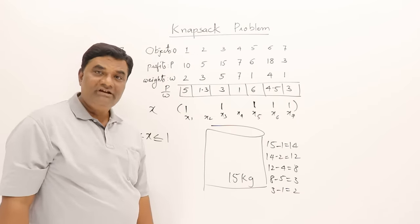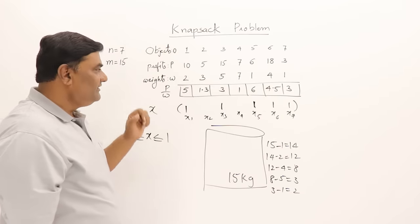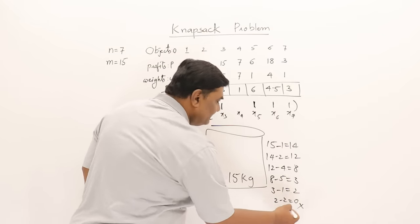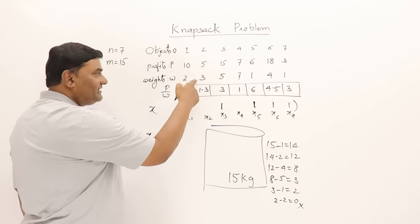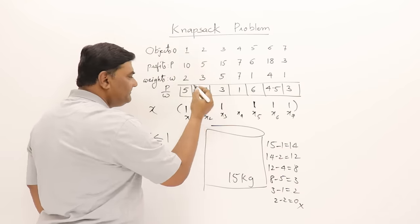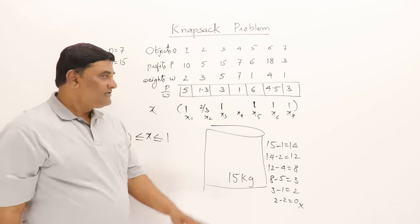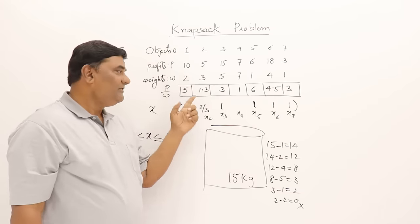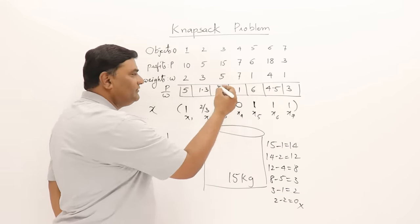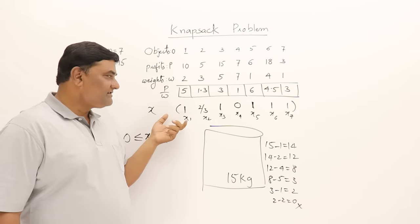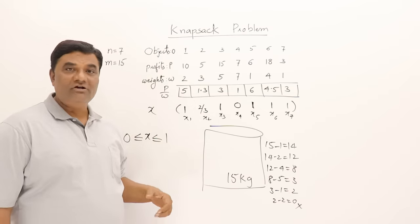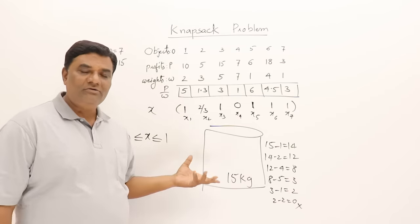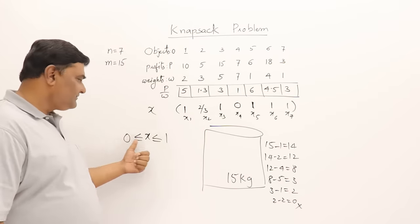I can only include 2 kg out of that 3 kg object, so x = 2/3 — I take a fraction of this object. The remaining object is not included at all. This gives us the complete solution showing which objects to include to get the maximum profit.